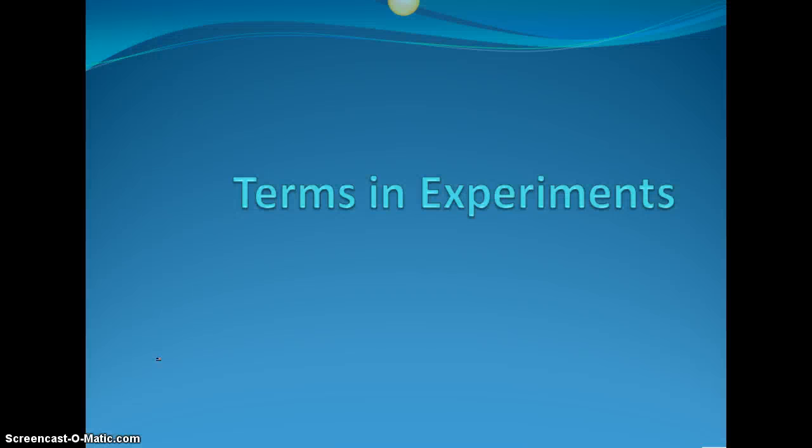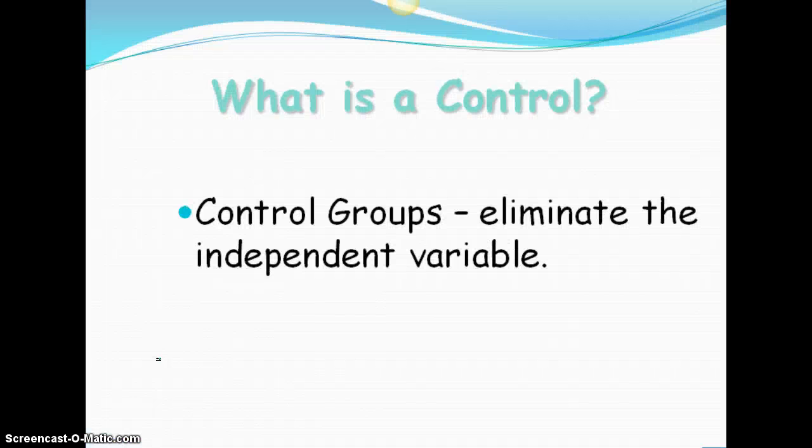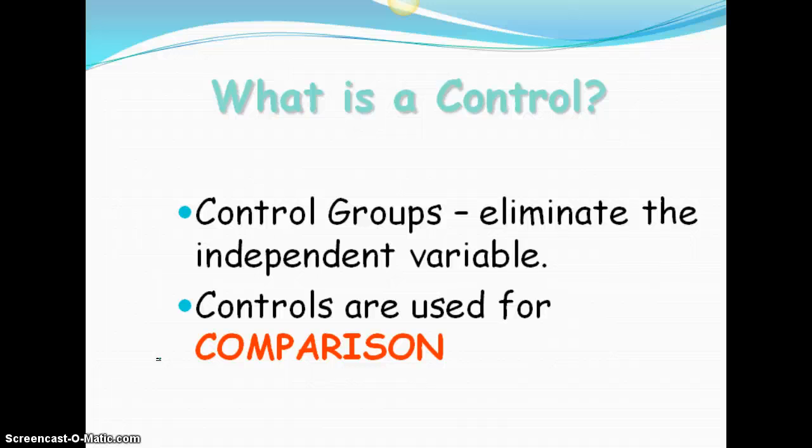Okay, if you're using your notes packet for this class, you can flip to the back of that front page and we're going to go over some of the key terms in experiments. So a control is a group that the independent variable is eliminated from. So we would eliminate the pollutant if we're talking about the salamanders. And this is the key part you need to know. It's used for a comparison. So a control group allows us to compare our real results to it. So if we wanted to test something like caffeine and students' results on tests, we would want to have a group of individuals that did not receive caffeine so that we can see did the caffeine actually boost test scores or did it matter at all.